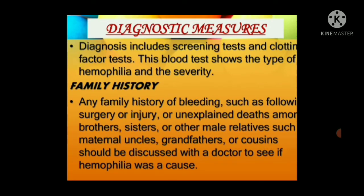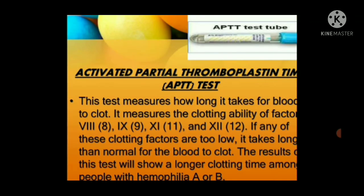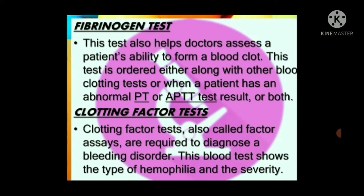Diagnostic measures: Diagnosis includes screening tests and clotting factor tests. A blood test shows the type of hemophilia and its severity. Family history of bleeding is most important — any family history following surgery, injury, or unexplained deaths among brothers, sisters, or male relatives such as maternal uncles, grandfathers, or cousins should be discussed with a doctor. Screening blood tests show if the blood is clotting properly: complete blood count, activated partial thromboplastin time (APTT), prothrombin time, fibrinogen test, and clotting factor tests.